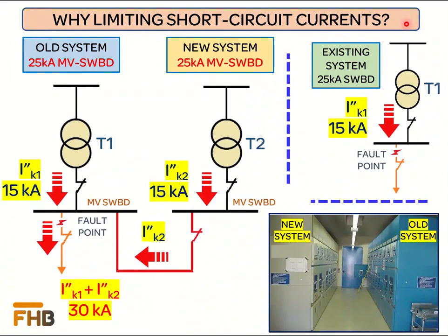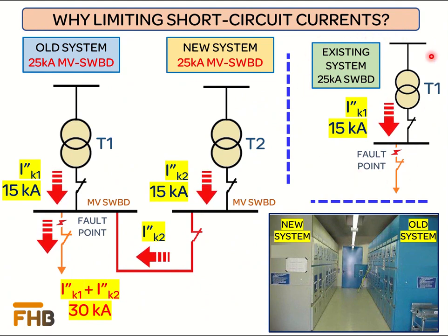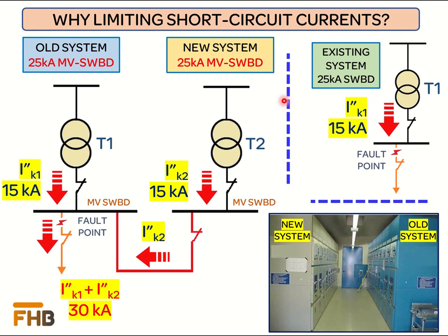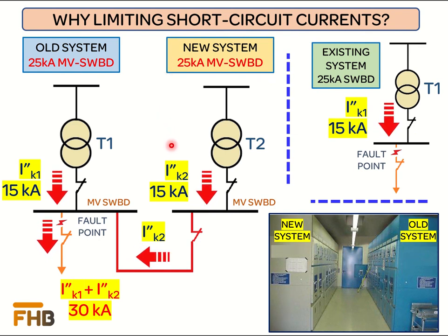To understand the need for current limiting devices, we consider a power network with an existing short circuit level of 15 kA. Considering this 15 kA value, the switchboard is designed at 25 kA, which is sufficient to handle short circuit faults. Now we expand our power network and add one more power line with a 15 kA short circuit value, and the switchboard is again rated at 25 kA. If the old and new systems work in isolation, there will be no problem as the short circuit values of the installed equipment match the isolated system values.